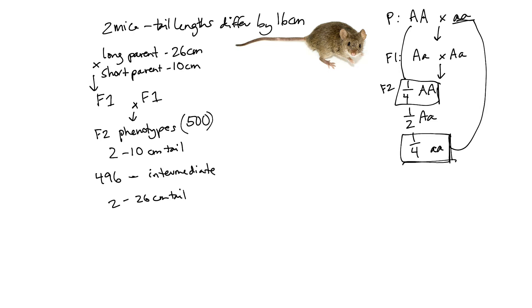So in order to tell how many loci, how many genes are involved in this trait, I want you to consider the individuals that have a parental phenotype. Okay, so we have two out of 500 that have the short parent phenotype, and two out of 500 that have the long parent phenotype. Two out of 500 could be simplified down to one out of 250. Now, if we were considering only one gene, we'd expect this number to be more like one quarter. But let's think how many genes multiplied together.